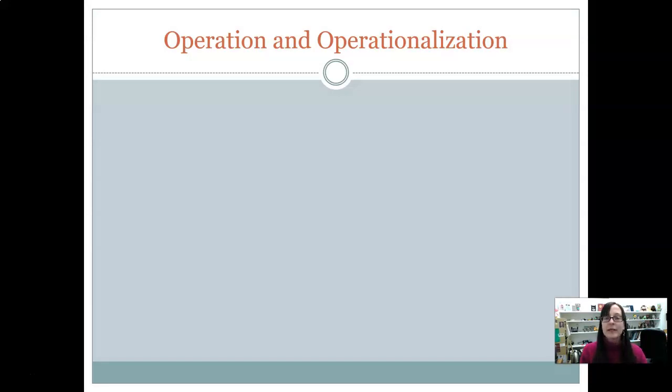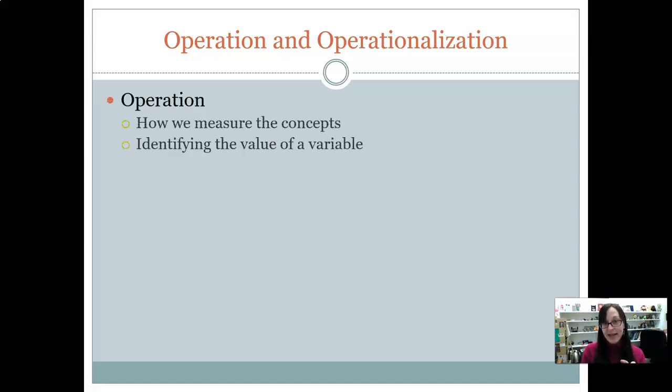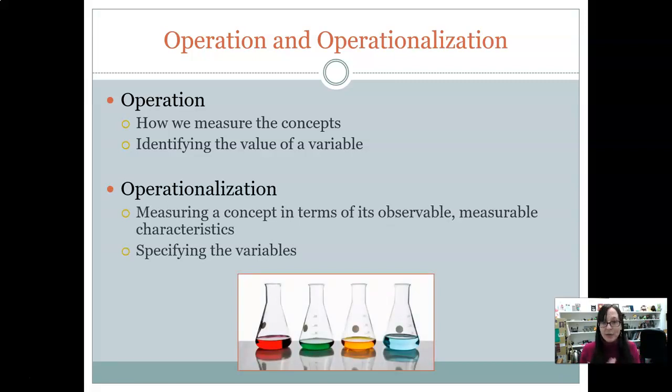And then here's where we get more into the specifics of what we really need when we're talking about research. You take that conceptualization - you've now conceptualized and really come up with what it is that you're doing. And then the operation is how you're measuring those concepts. You're identifying the value of a variable. For example, for subject number one, this is the value on variable x. If the variable is gender, then subject one has a value of one, which means that they're female. The operationalization process is where you actually come up with what are your variables. It's essentially creating the operations.